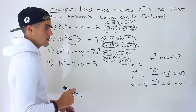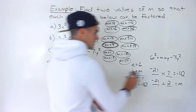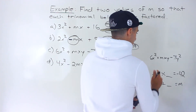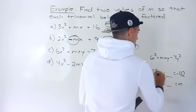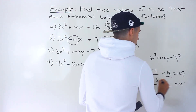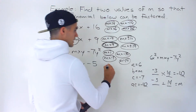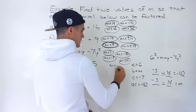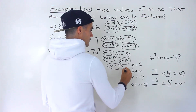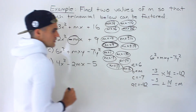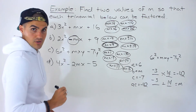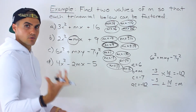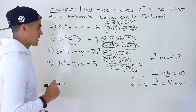Let's do one more set: 3 and 14. Negative 3 times 14 gives negative 42. Negative 3 plus 14 gives 11, so m = 11. Switching signs gives m = negative 11. Take all those m values, plug in here, and you'll get a trinomial that can be factored.